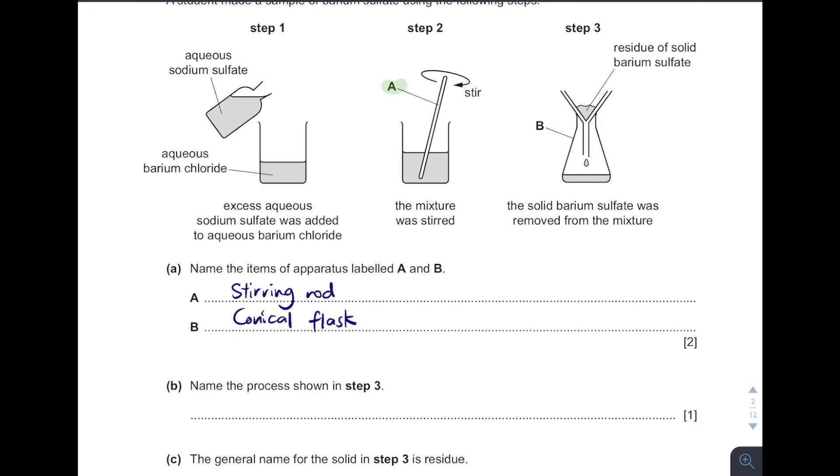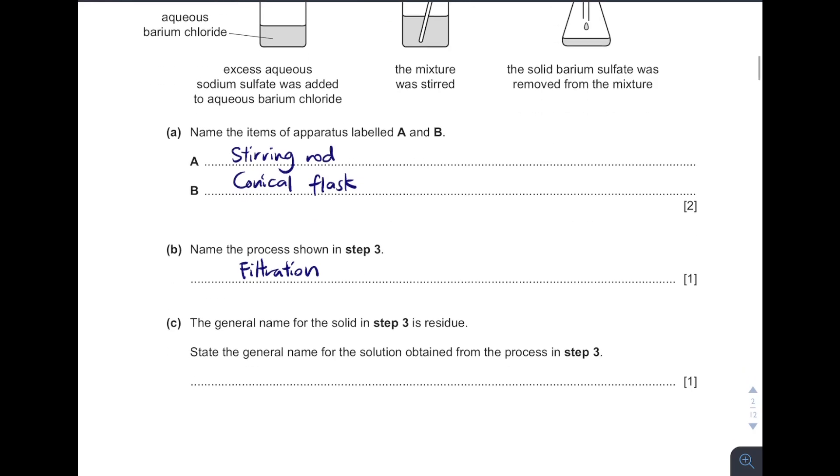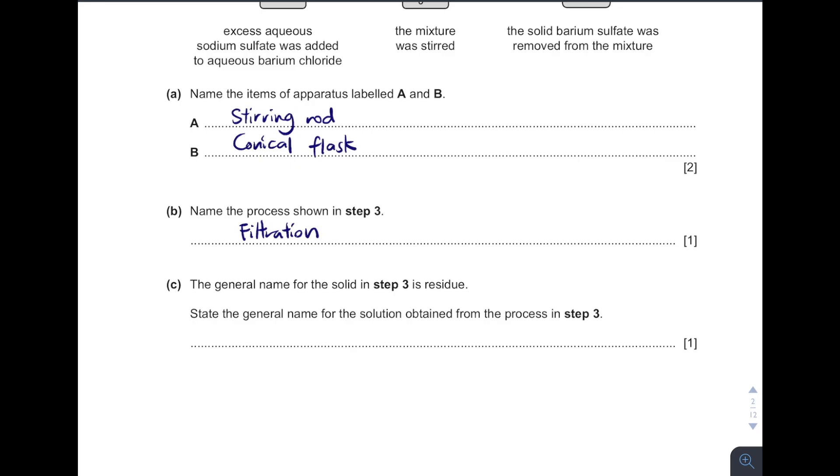Name the process in step 3. Step 3 very obvious, we know this is an example of filtration. The general name for solid in step 3 is residue and then what is the solution obtained? After filtration, the solid that will get separated is called residue and the liquid that obtained is called filtrate.